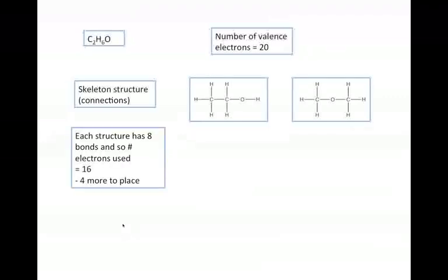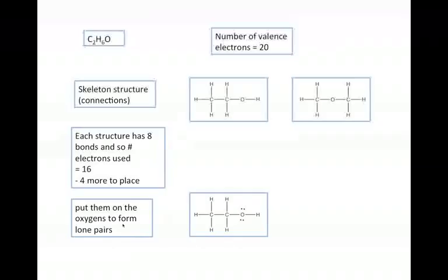So now, if we count up the number of electrons that we've used in these structures, we see that each structure has the same number of bonds, eight. And so we've used 16 electrons. That means we've got four more to place, where should we put them? Well, if we look at the oxygens, they don't have enough electrons. They've only got two bonds, and what we need to do is to place the four electrons on the oxygen on each structure. So that we now, when we do our electron count total, we've used all the electrons. We've got the right number of bonds and the right number of lone pairs on every atom. So we're done.